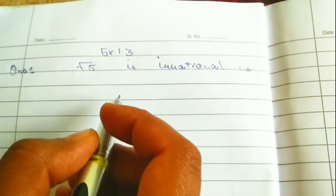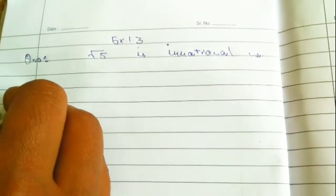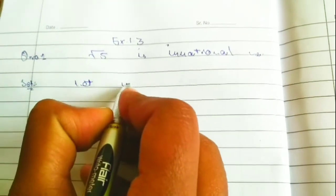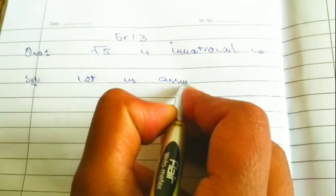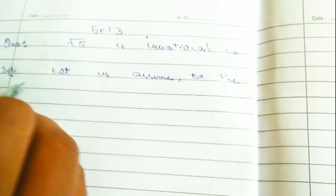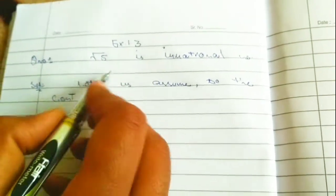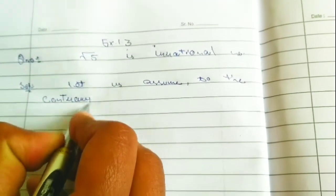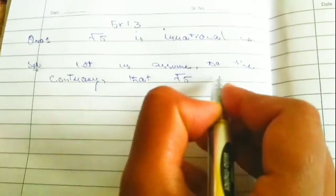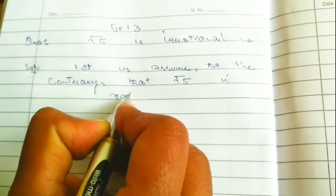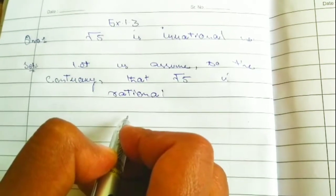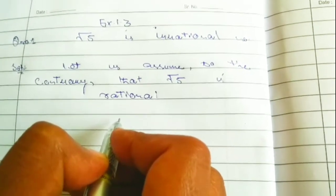Let's do the question here. Let's assume to the contrary that under root of 5 is rational. So if under root of 5 is rational, that means we can write it in the form of A upon B.